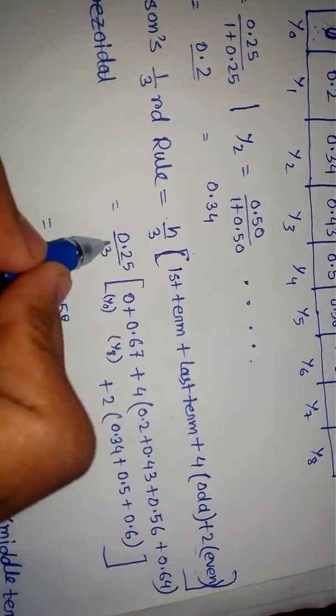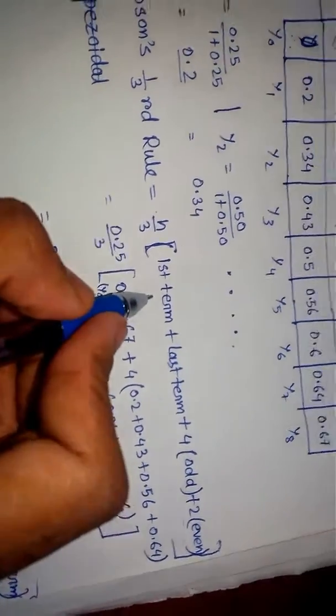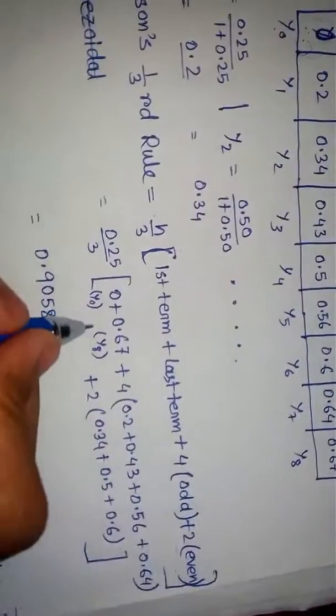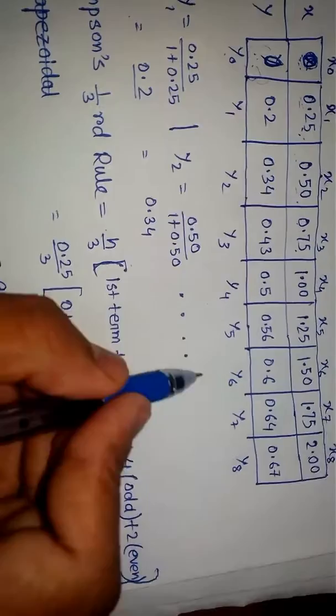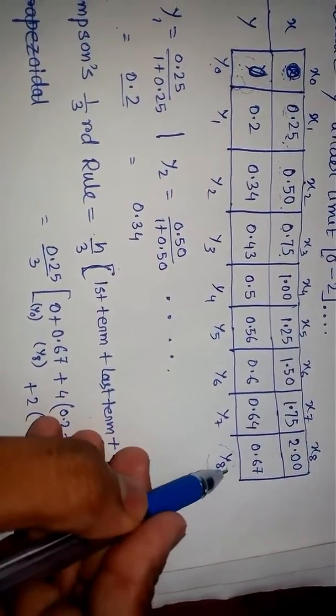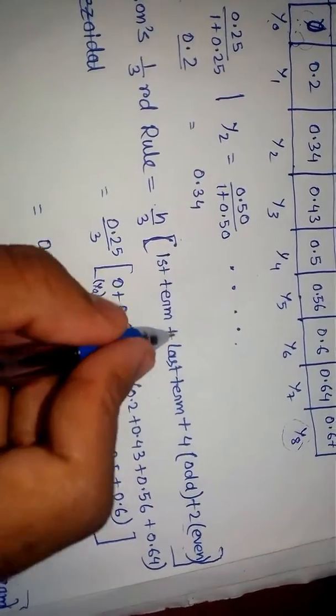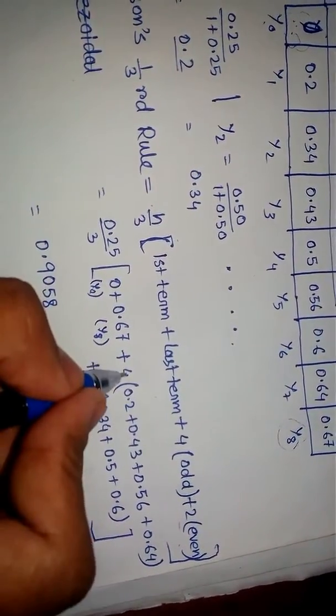As written here, h we have calculated as 0.25. Now we write 0.25/3 as the formula says. First term - what is the first term? Here, the first term is y₀, so y₀ is written, which is 0. Plus the last term, which is y₈, that is 0.67.